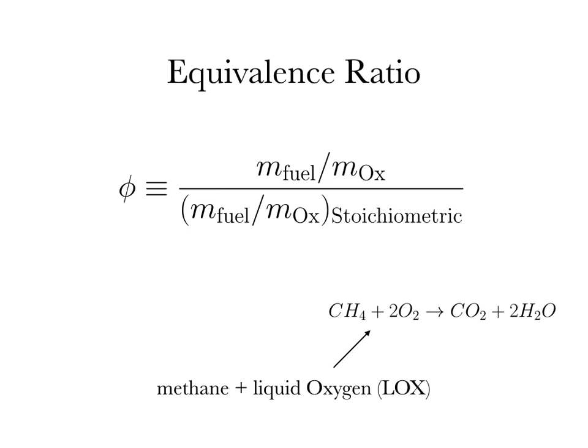The liquid droplet model is as follows. We have two phases. One phase is the gas phase consisting of both the oxidizer in its gas phase and fuel in its gas phase. The thermodynamic state of this gas phase system is completely specified by Tg — the temperature of the gas — P, which is the combustion chamber pressure taken to be constant throughout the combustion chamber, and phi_g, the equivalence ratio between fuel and oxidizer.